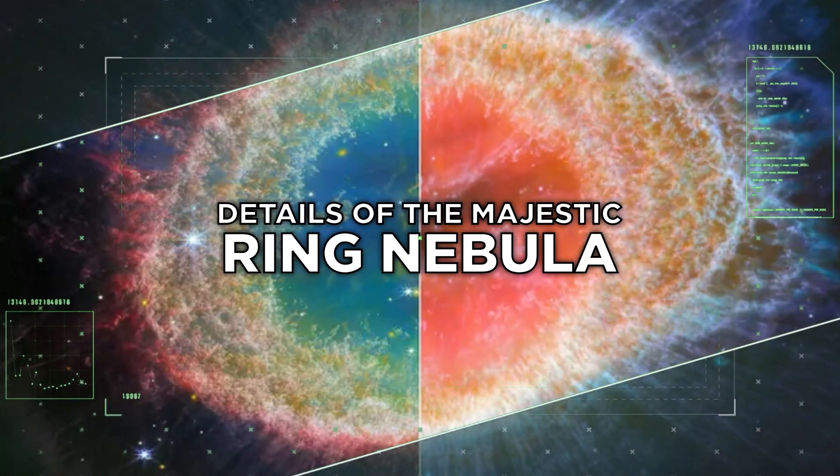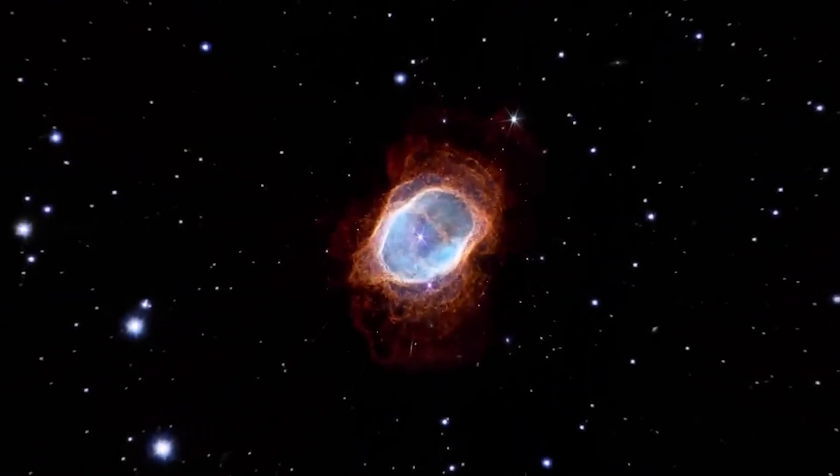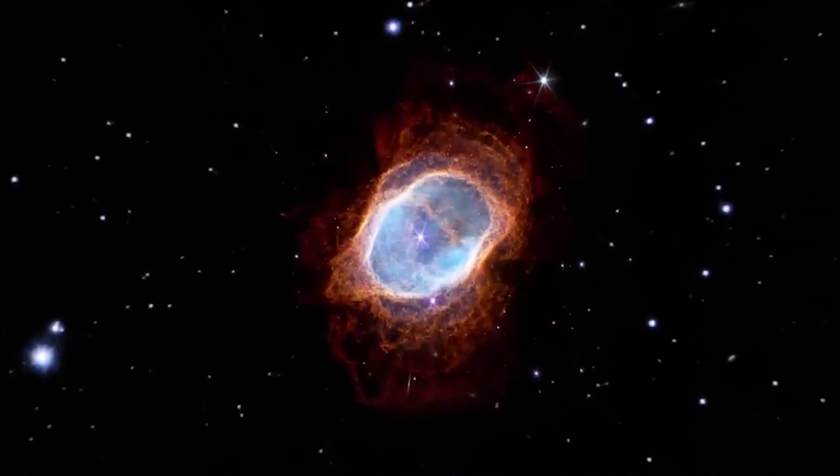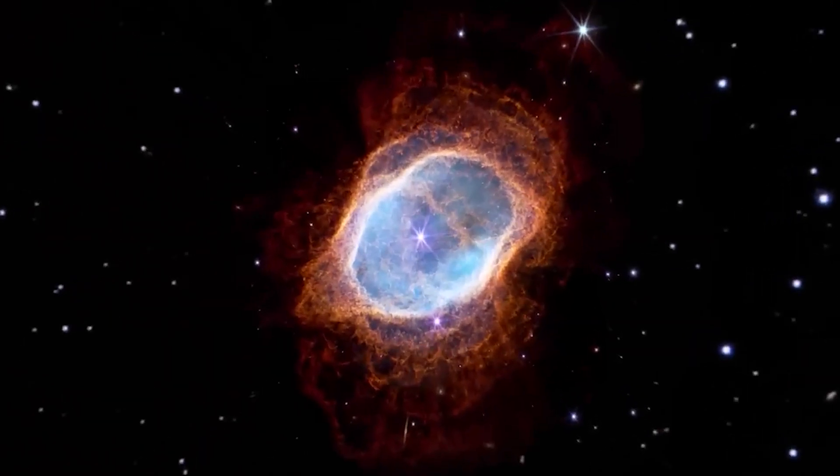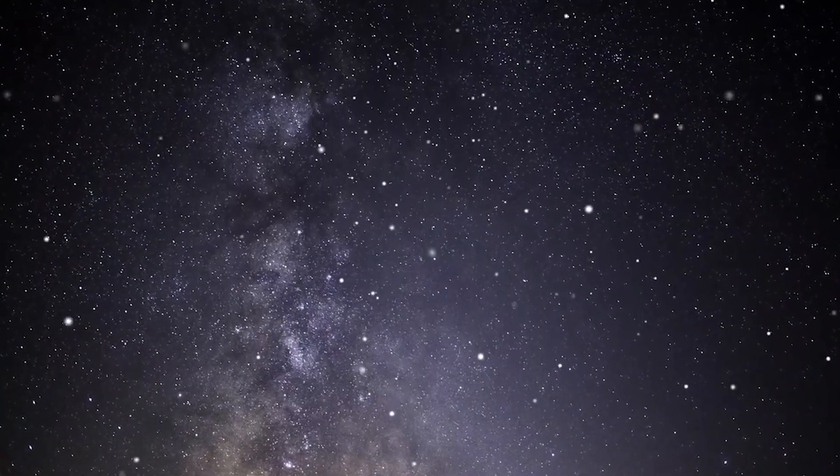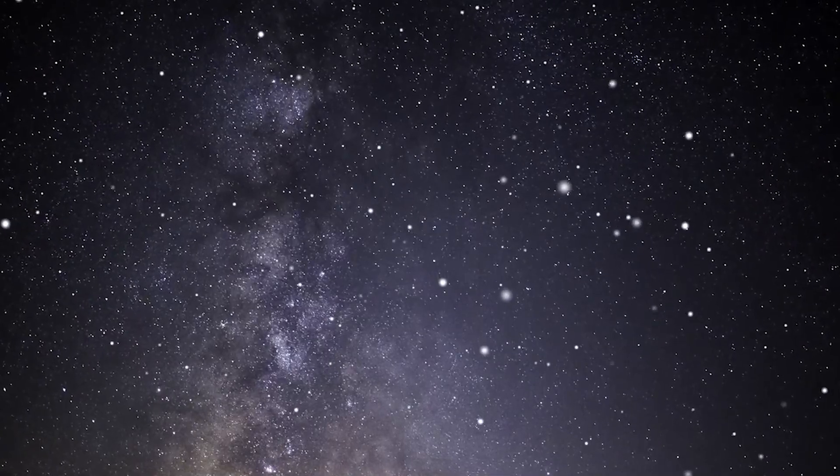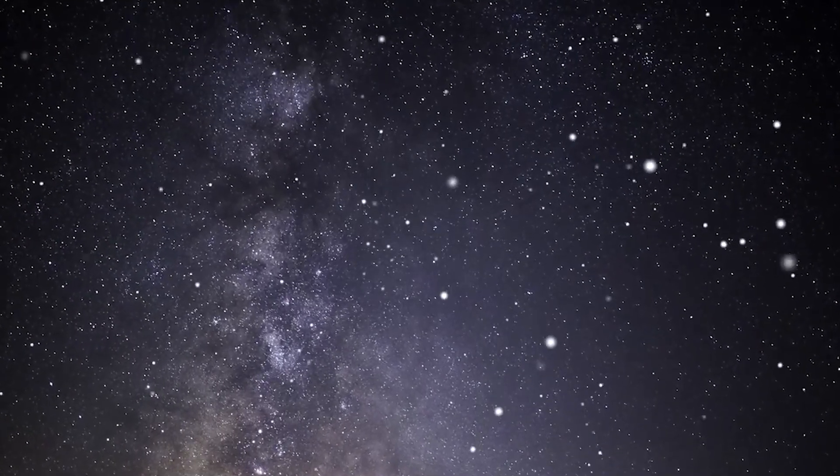Details of the majestic Ring Nebula. James Webb Space Telescope has also provided an unparalleled view of the renowned Ring Nebula, M57 in Lyra, showcasing its intricate features in unprecedented detail. The Ring Nebula in Lyra stands as one of the most captivating planetary nebulae in the night sky, representing the final stage of sun-like stars.